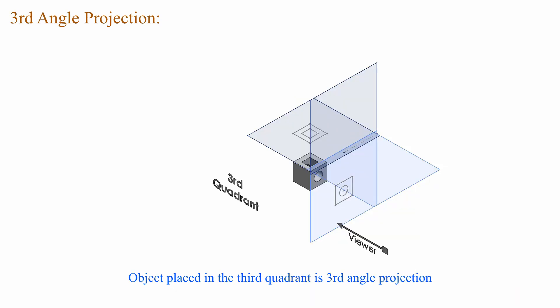Next we are going to see third angle projection. An object placed in the third quadrant is third angle projection. The sequence is: viewer, imaginary plane, object.